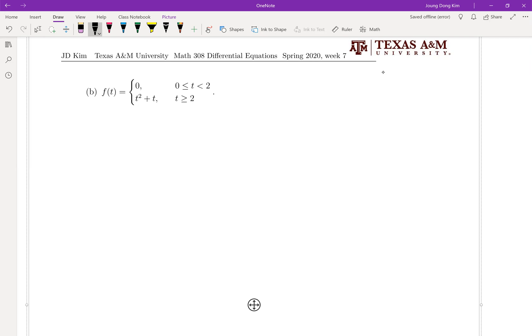To do so, let me write your function in terms of unit step function. It can be written as u2t times t squared plus t. That's it, because the first one is zero.